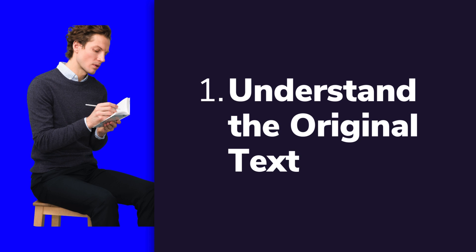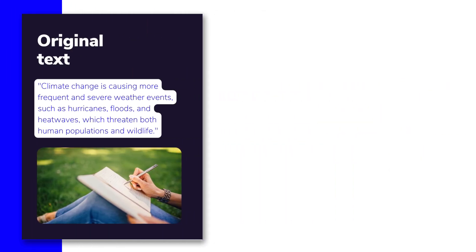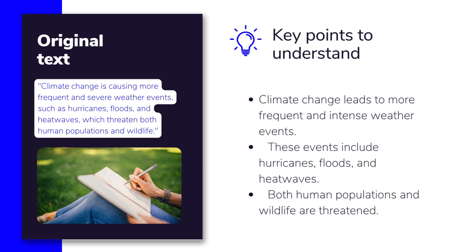Before you dive into paraphrasing, it's important to really understand what the text is saying. This means carefully reading and thinking about the content. Ask yourself a few key questions: What's the main idea? What details support that idea? And are there any specific terms or phrases crucial to the meaning? For example, if the original text says 'climate change is causing more frequent and severe weather events, such as hurricanes, floods, and heat waves, which threaten both human populations and wildlife,' you need to pick out the key points: climate change is leading to more intense weather; these include hurricanes, floods, and heat waves; and both people and wildlife are at risk.